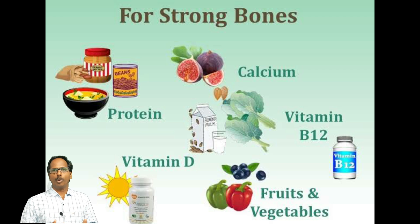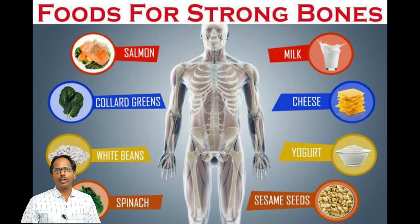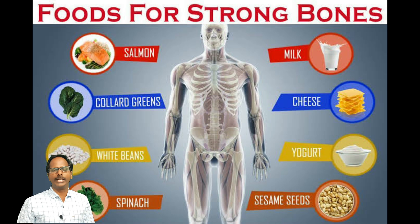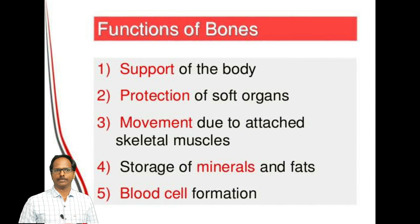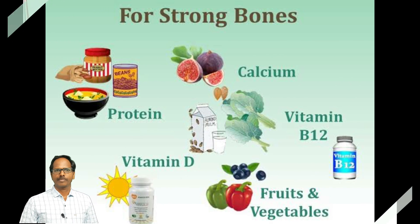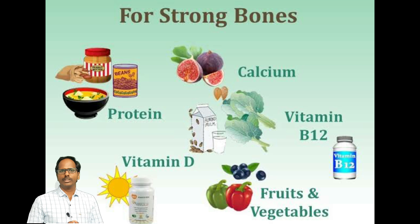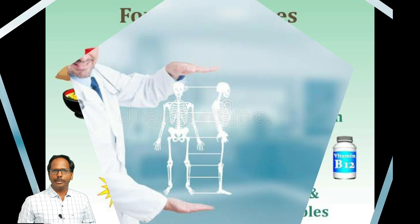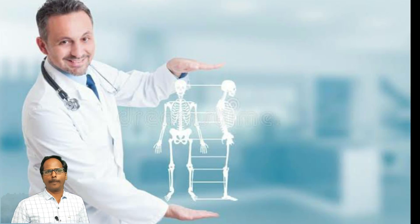Children, the bones give shape to the body. We get vitamin D when we are exposed to sunlight. Vitamin D helps bones and skin in remaining healthy. If the bones grow, we can grow in height. For strong bones, we should take milk, eggs, and leafy vegetables. Walking, working, playing, and staying out in the sunlight is good for health and strong bones. Children, do you know — the doctor who treats diseases of the bones is called an orthopedician.